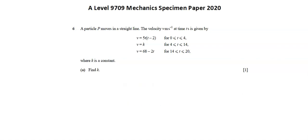For the interval 4 to 14, inclusive of 4 and 14, v equals k. For time equals 4, the first function given also applies, and at 14, the third function given also applies.